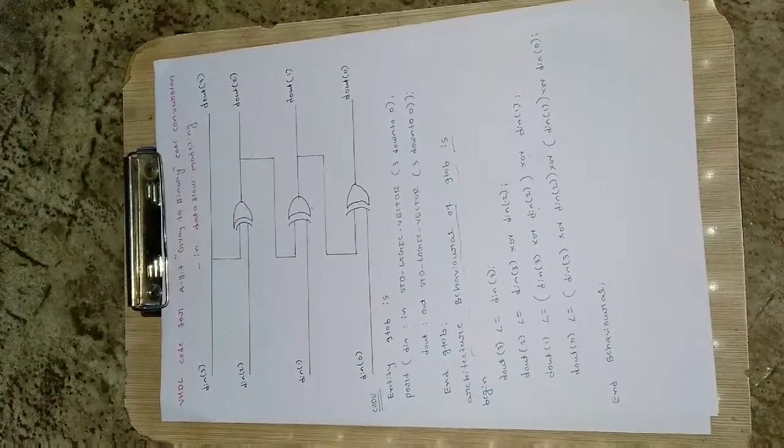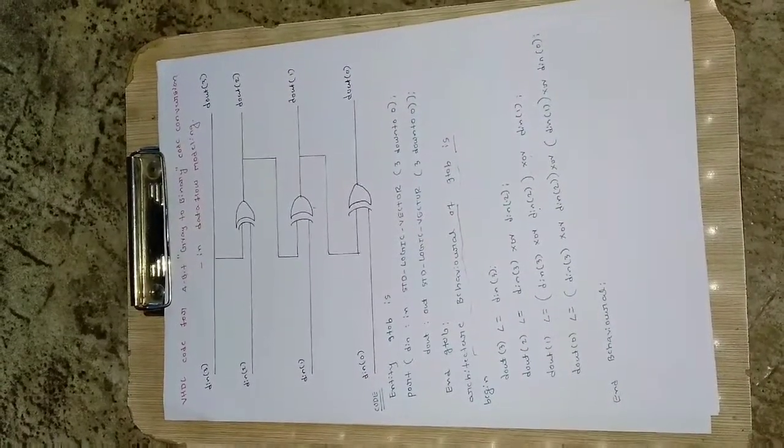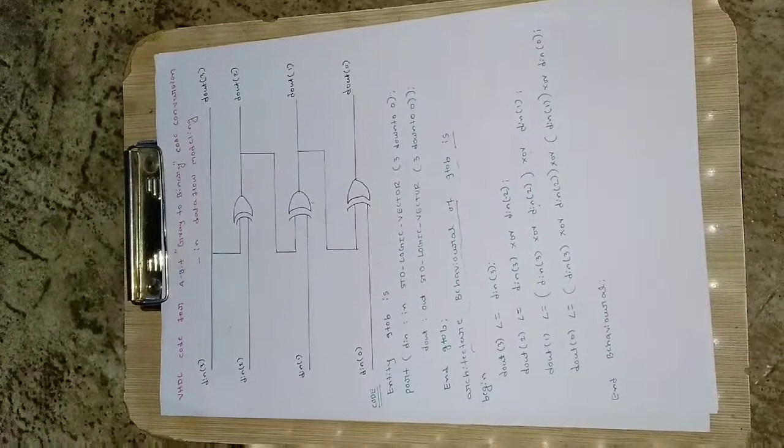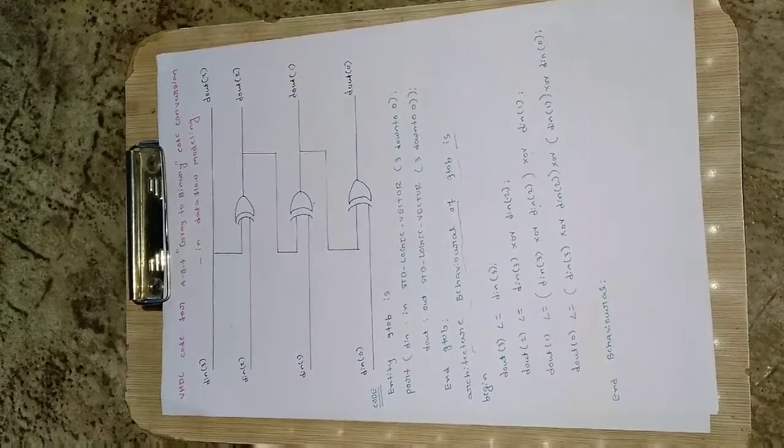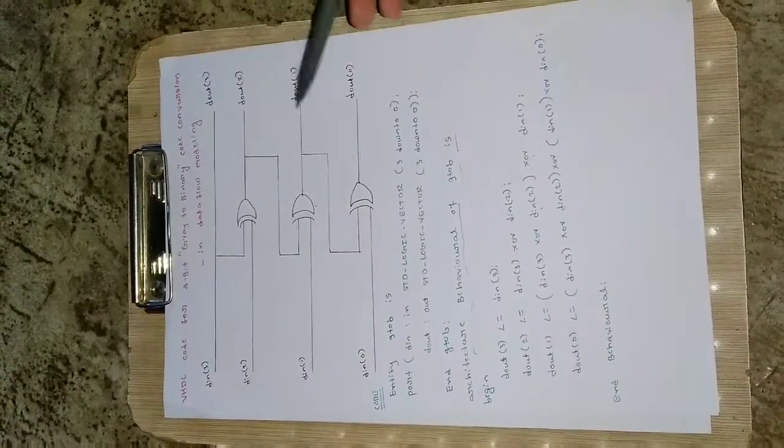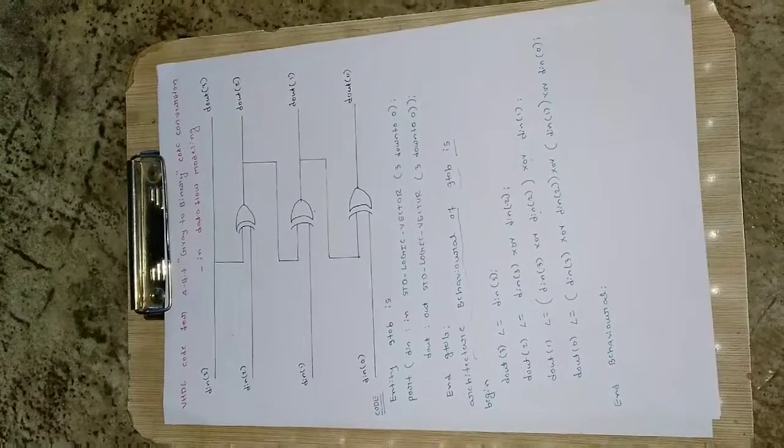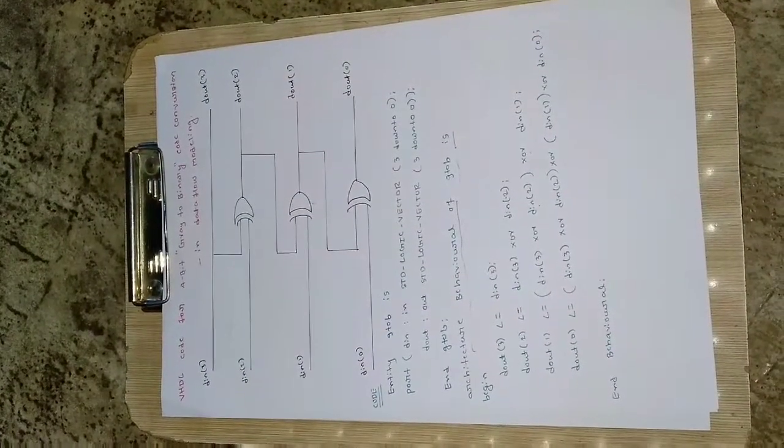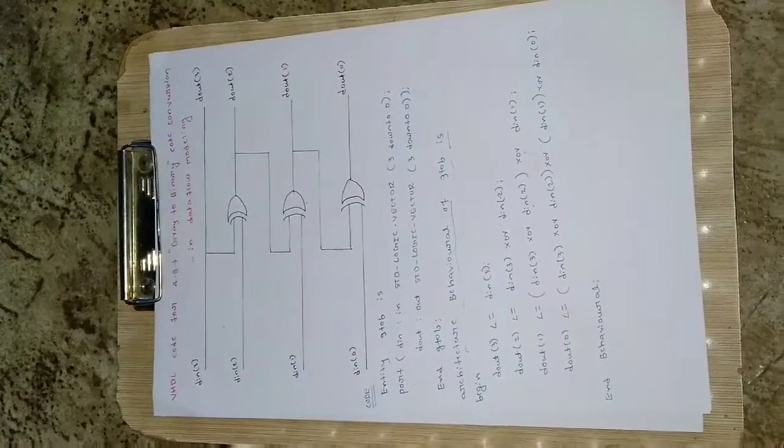Similarly you can write for anything, that is 2-bit binary to gray or gray to binary. If you know the circuit diagram then it will become very easy for us to write the data flow modeling. I hope you like this video, please guys if you are new to the channel hit the like button and subscribe the channel for more updates. Thank you, thanks for watching.